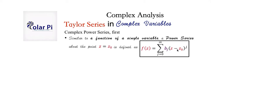A couple of notes: if the power series is about the point z equals zero, then we'll just have z to the power j. Also notice that we say 'similar to a function of a single variable' because functions of a complex variable act like functions of two variables — a real part and an imaginary part — as opposed to a function of a single real variable. But for us, a specific power series is of interest, and that is the Taylor series.